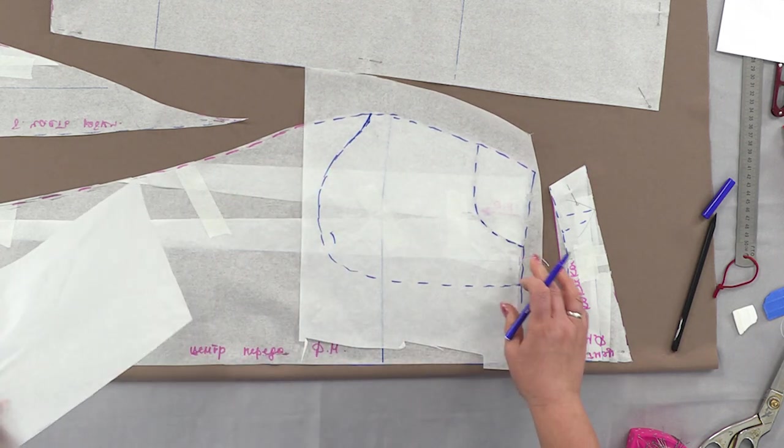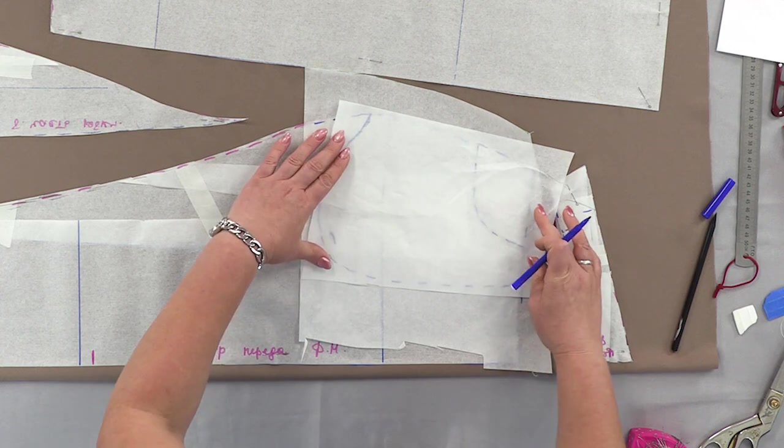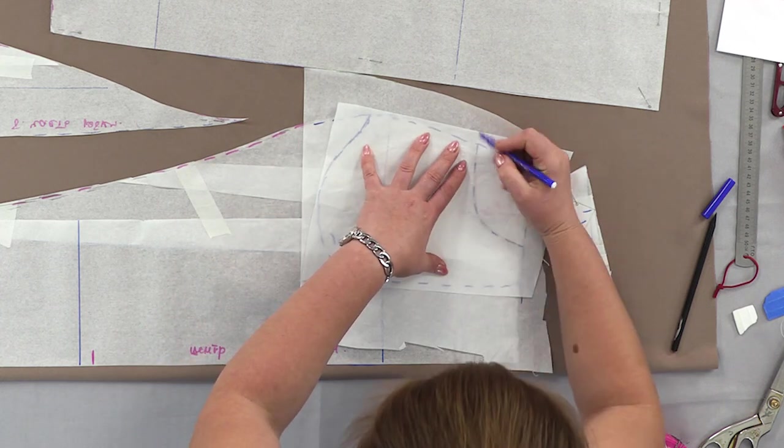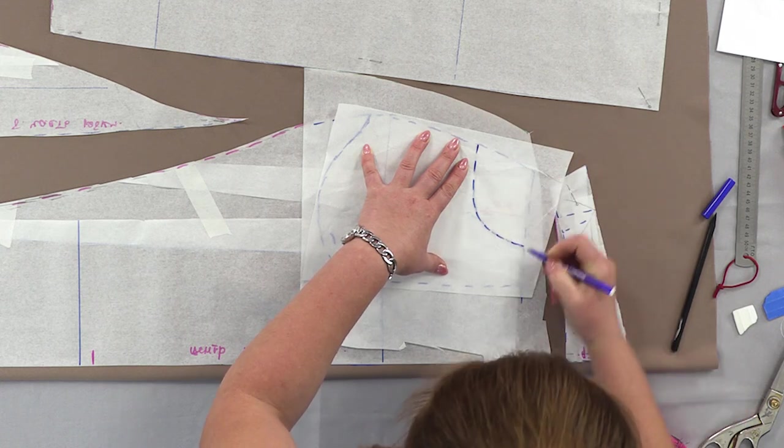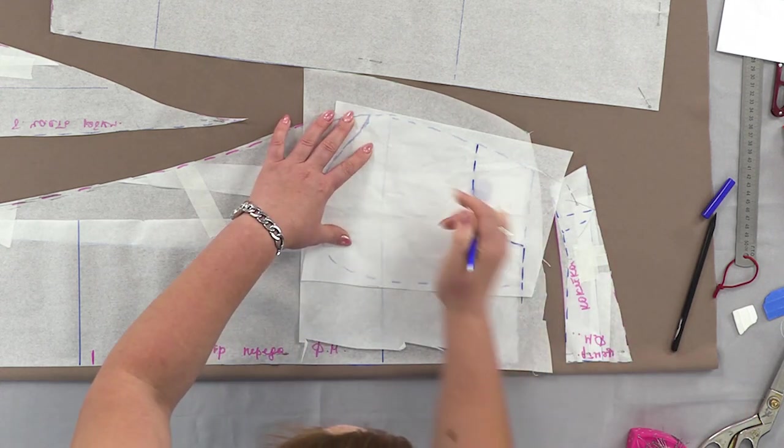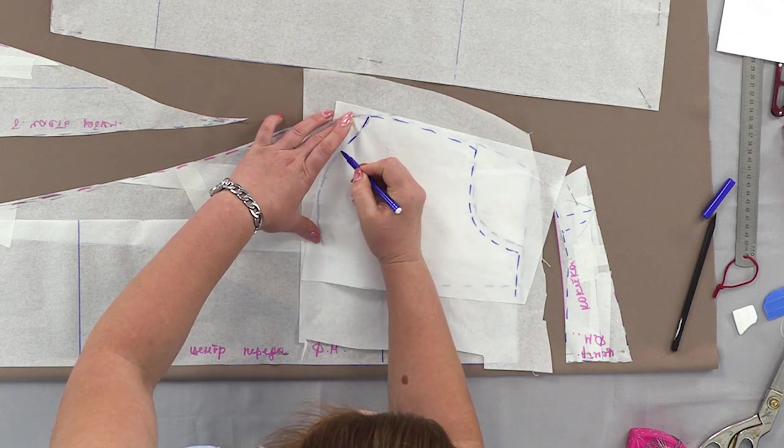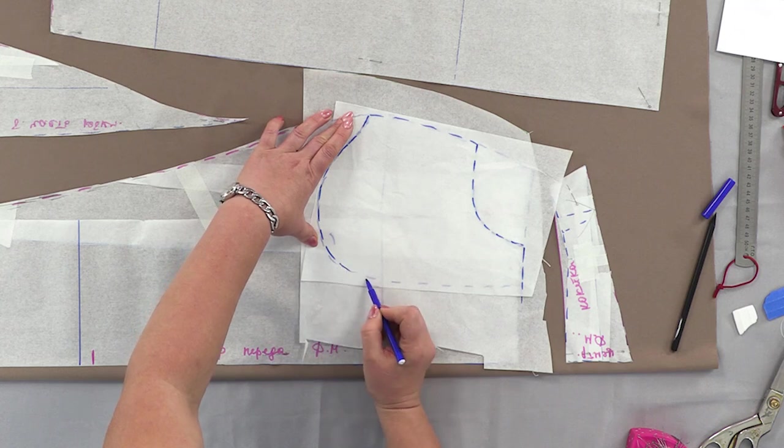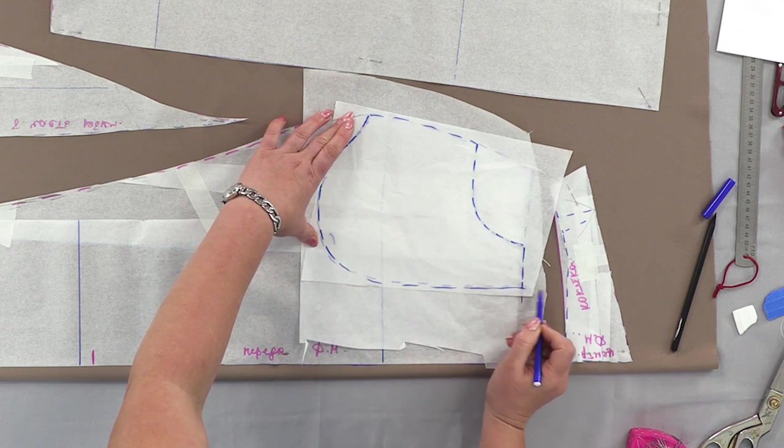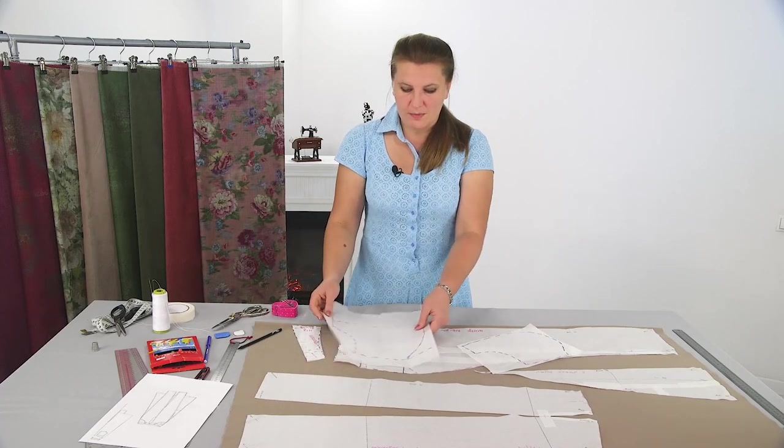And then we draw the bag. This is one part of the pocket. We can do the second part right away, the one we sew here. A pocket once again.